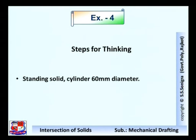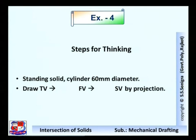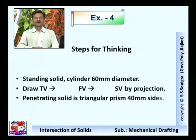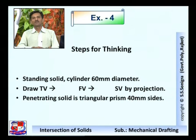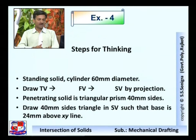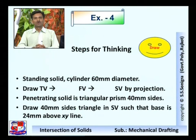The standing solid is a cylinder of diameter 60 mm and 70 mm height, as given in the data. Draw the top view, front view, and side view by taking projections from the top view — the cylinder would appear as a rectangle in the front view and side view. The penetrating solid is a triangular prism with 40 mm sides. Draw a 40 mm triangle in the side view such that the base is 24 mm above the XY line.